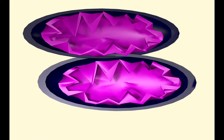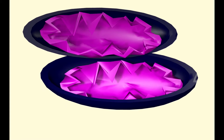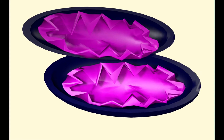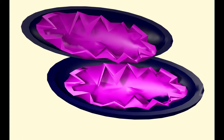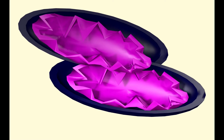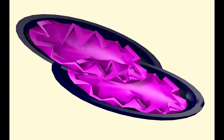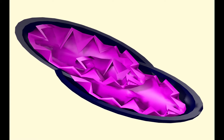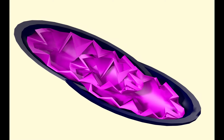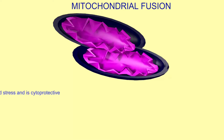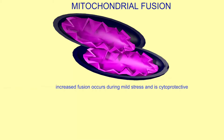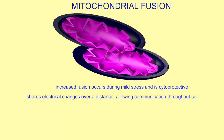Mitochondrial fusion increases during mild stress and it protects the cell. This allows the mitochondria to share electrical changes over a distance, allowing for more communication. It's thought that mitochondrial resources can be pooled, rescuing some which are defective.